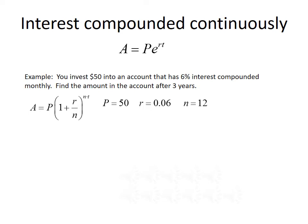We want to find the amount A, in the account after three years, so T is equal to 3. We plug that information into the formula, giving us A equals 50 times 1 plus 0.06 divided by 12, all raised to the 12 times 3 power. We can plug this into our calculator, and the amount in the account after three years is approximately $59.83.